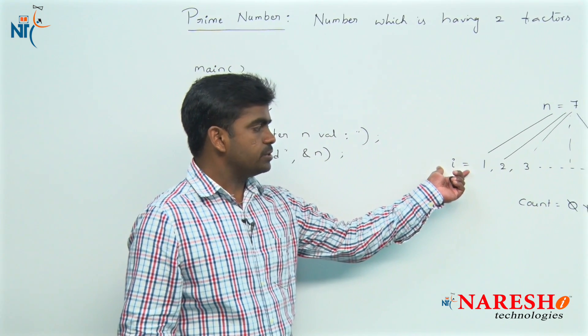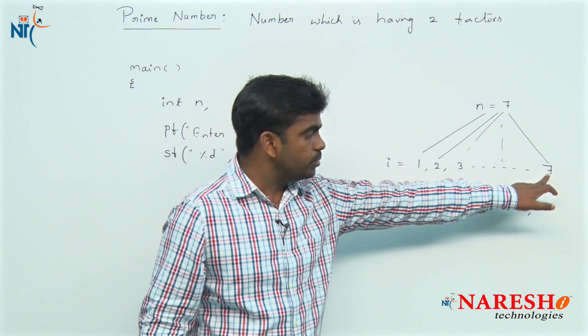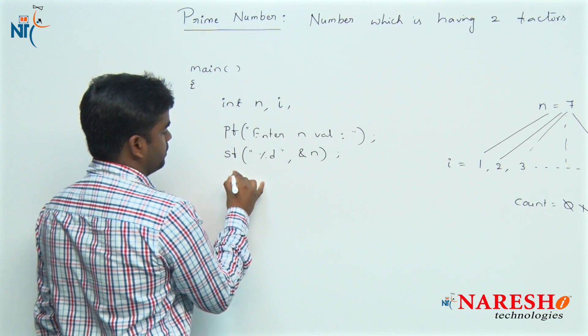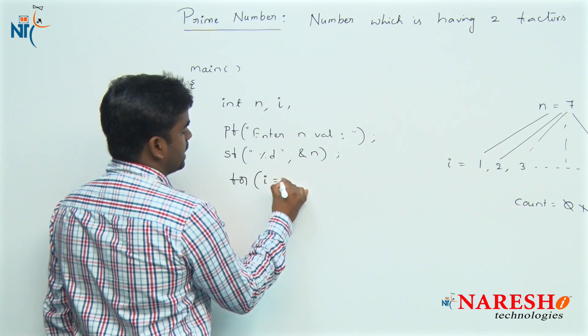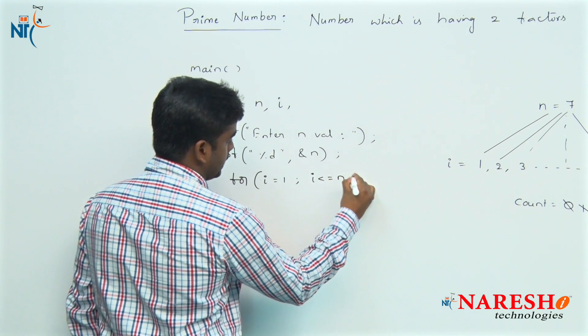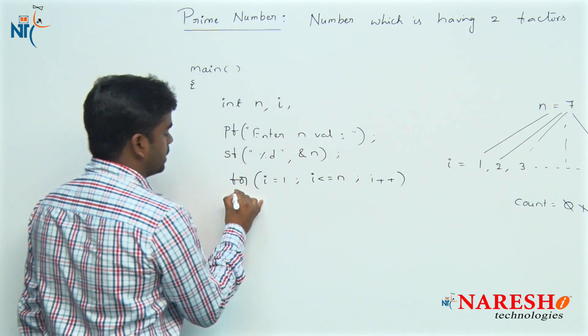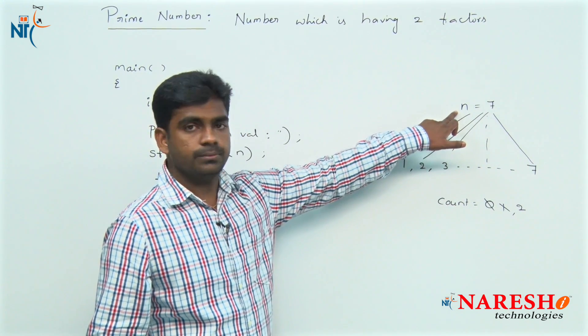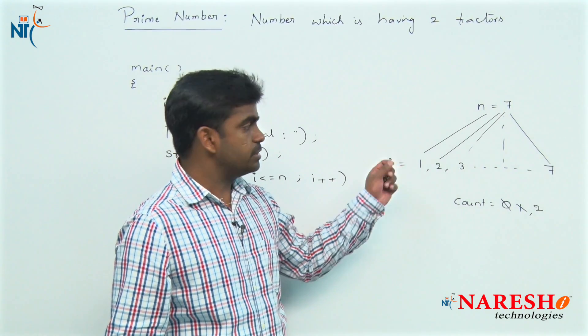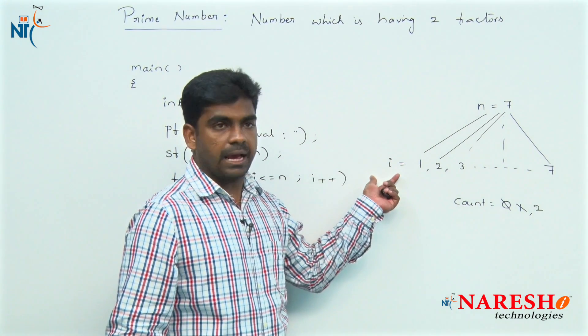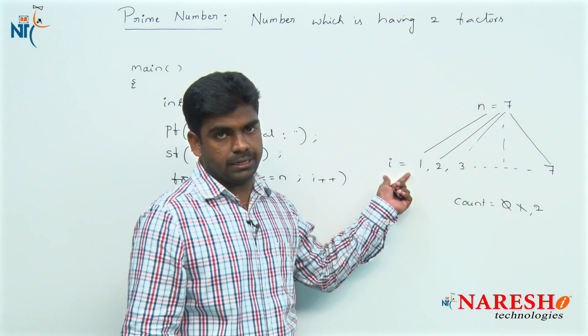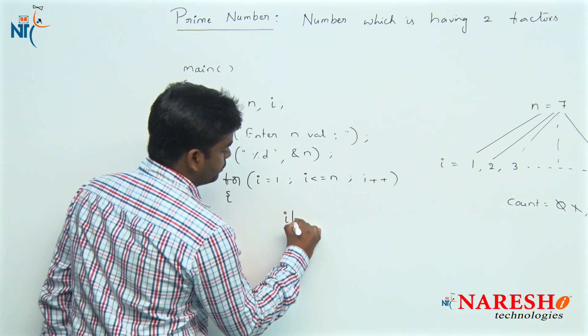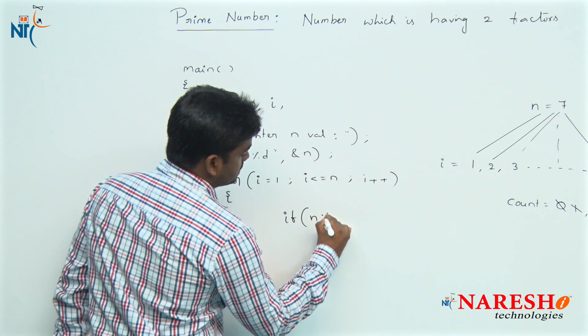Here, I value starts from 1 to itself, up to N. With the help of variable I, we are repeating the loop. I value starts from 1 to N, every time we are increasing by 1 and every time we are checking if N mod I equals zero. That means if N is divisible by I, we can say that I is a factor of N.